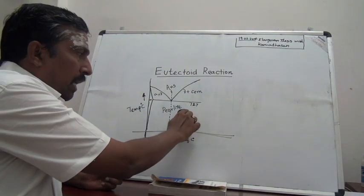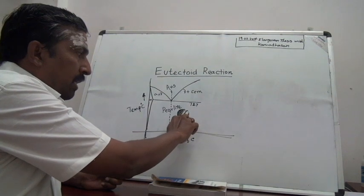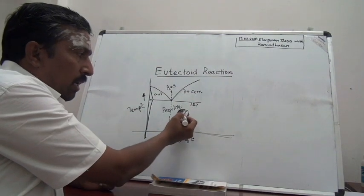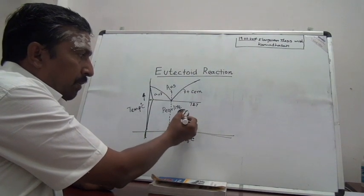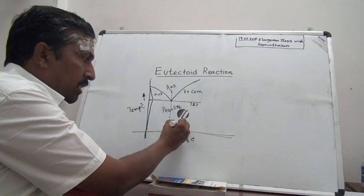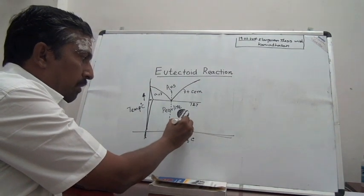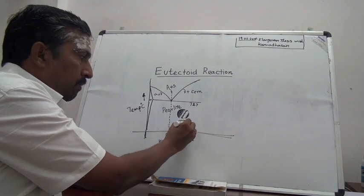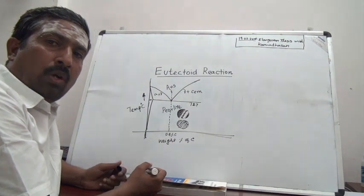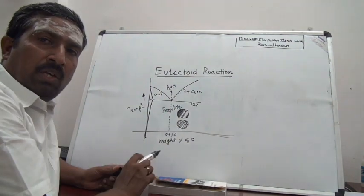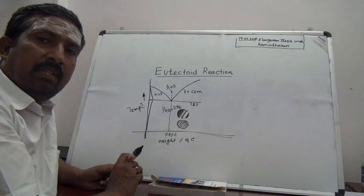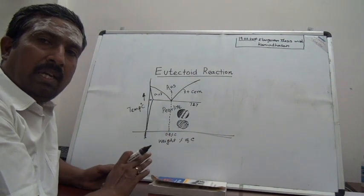Similarly, another ferrite layer forms, and its adjacent layers are converted into cementite. Therefore, the resulting structure is an alternate layer of ferrite and cementite — this is pearlite. Pearlite is an alternate layer of ferrite and cementite.